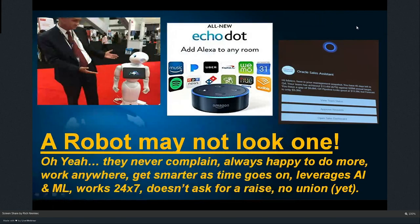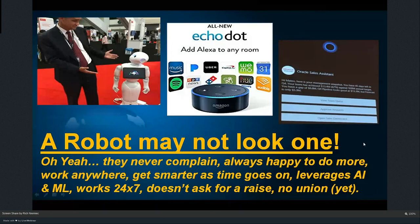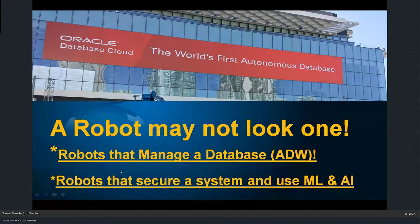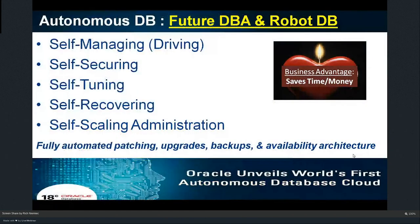A robot may not look like one. Pepper the robot, Alexa, Siri — all of them are robots. They don't complain and work 24/7. You may feel threatened by them in your job, but you shouldn't. You don't have to work 24/7 because your autonomous database will put that patch on. An autonomous database is a robot that manages the database — maybe your lesser-used databases, ones you don't have time to secure, or ones you want to use for machine learning or AI. It's self-managing, self-securing, self-tuning, and self-recovering. It puts the patch on before you even know you need a patch.